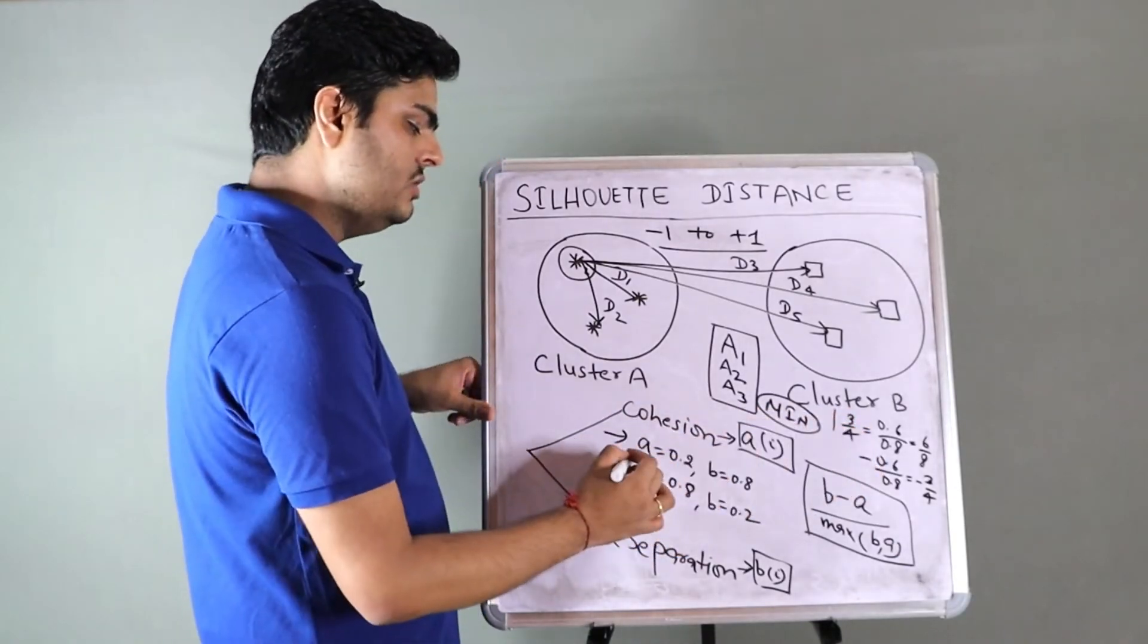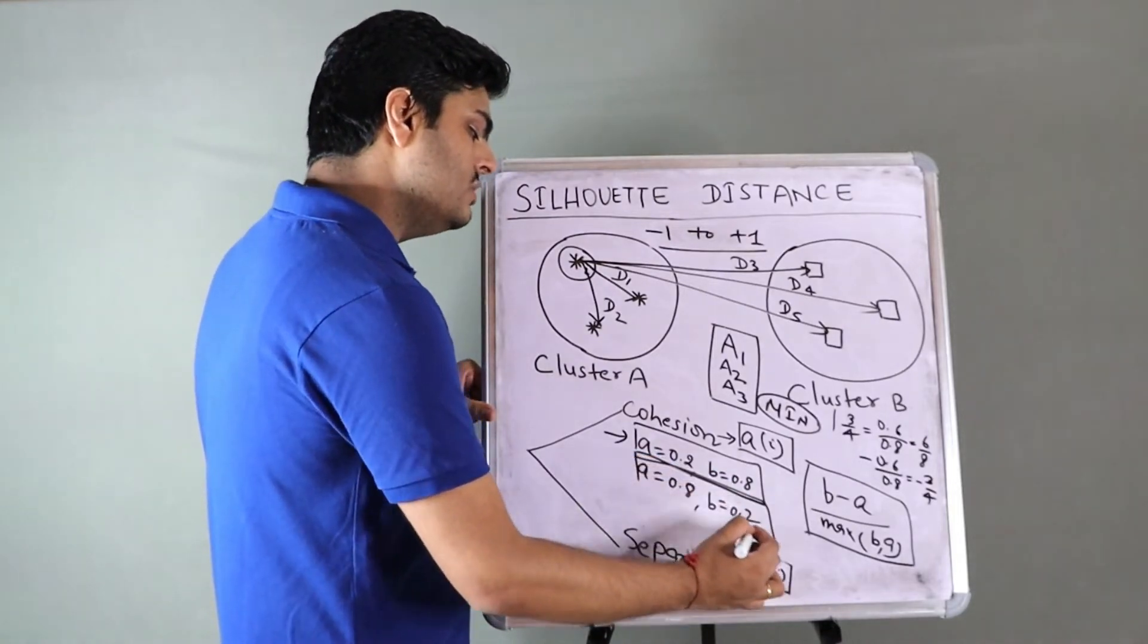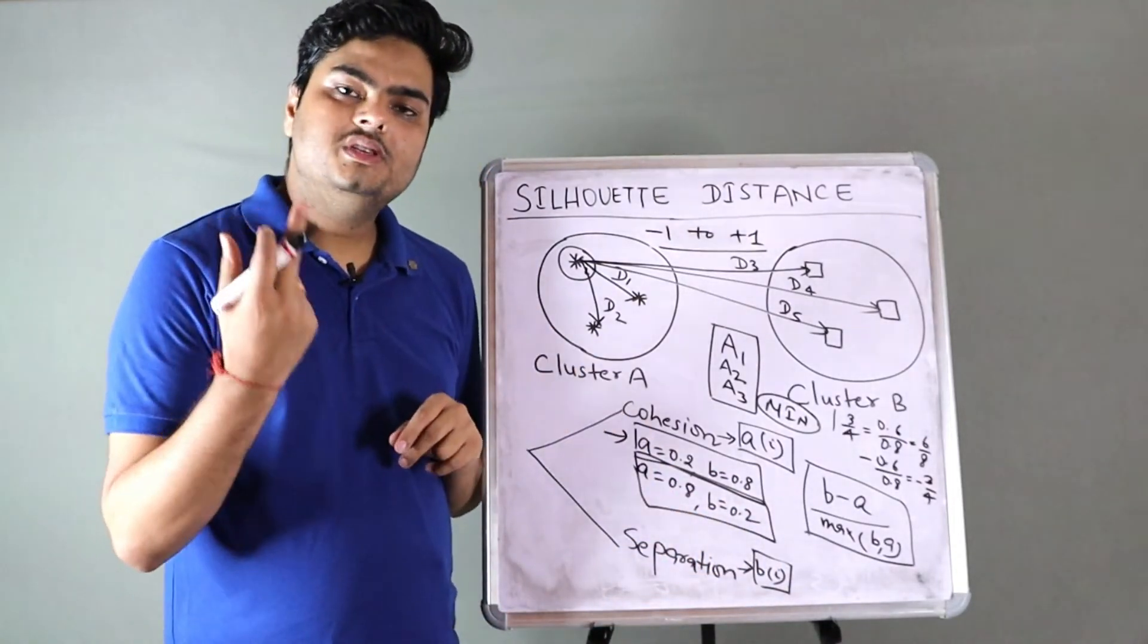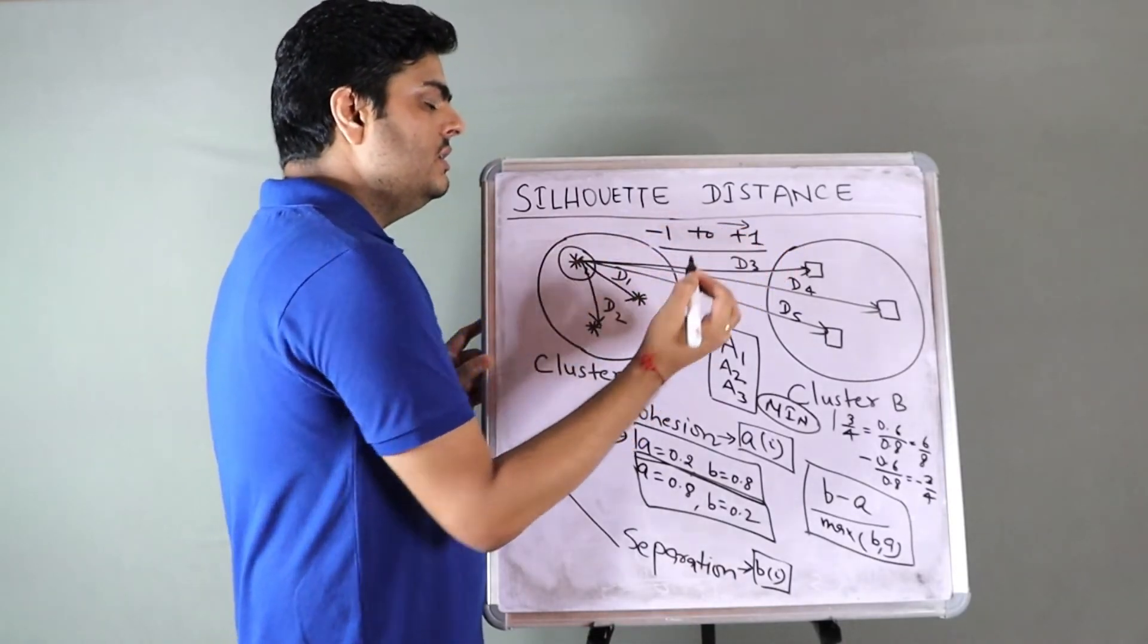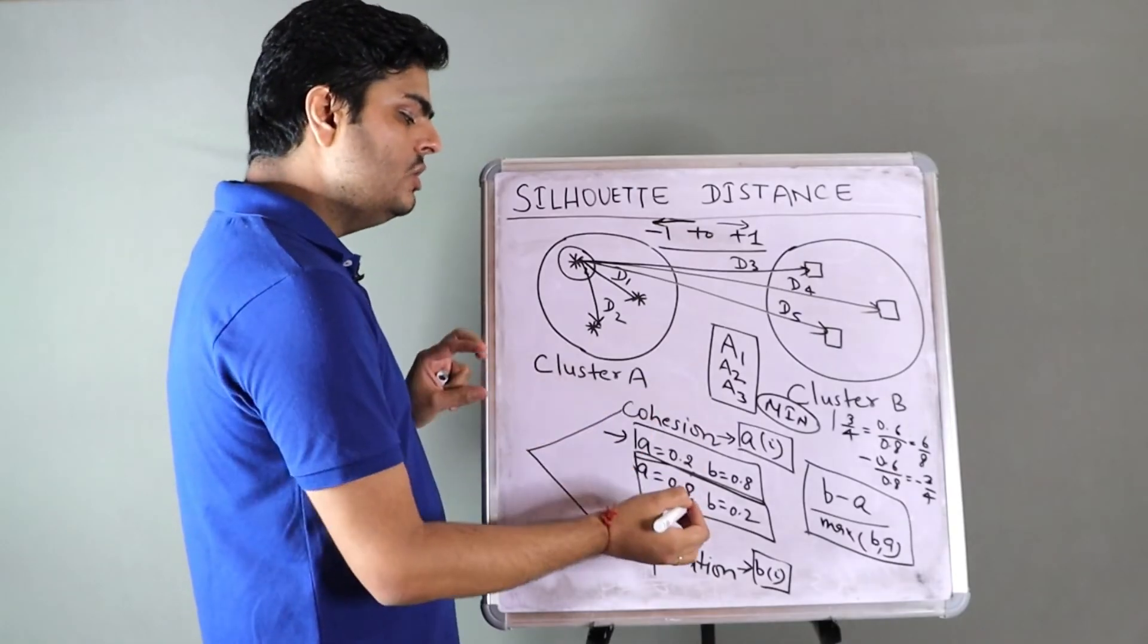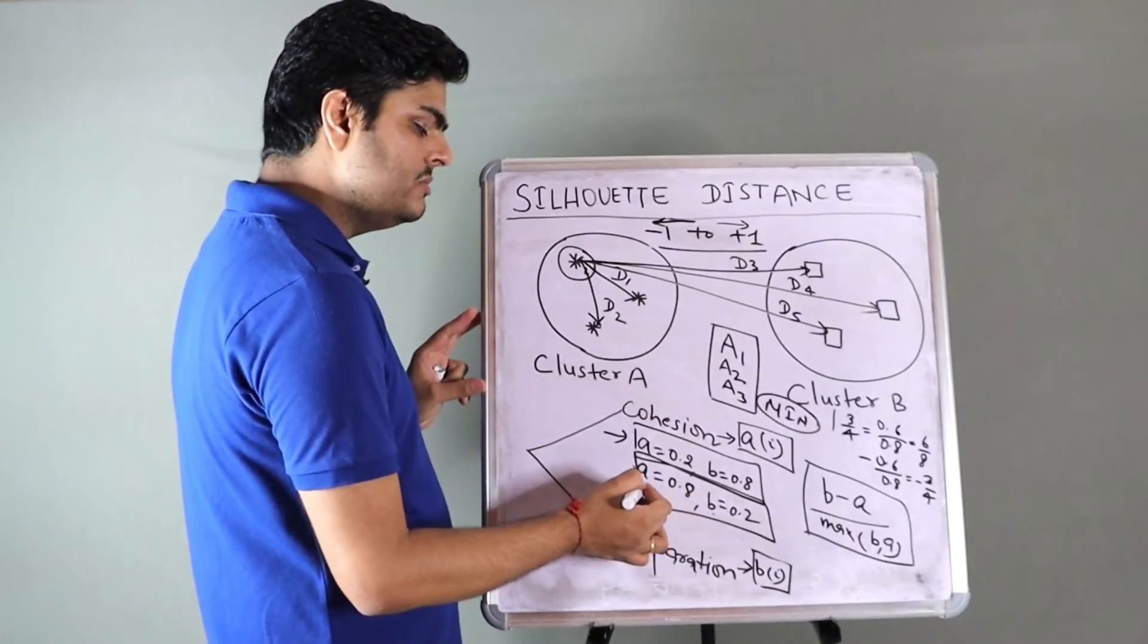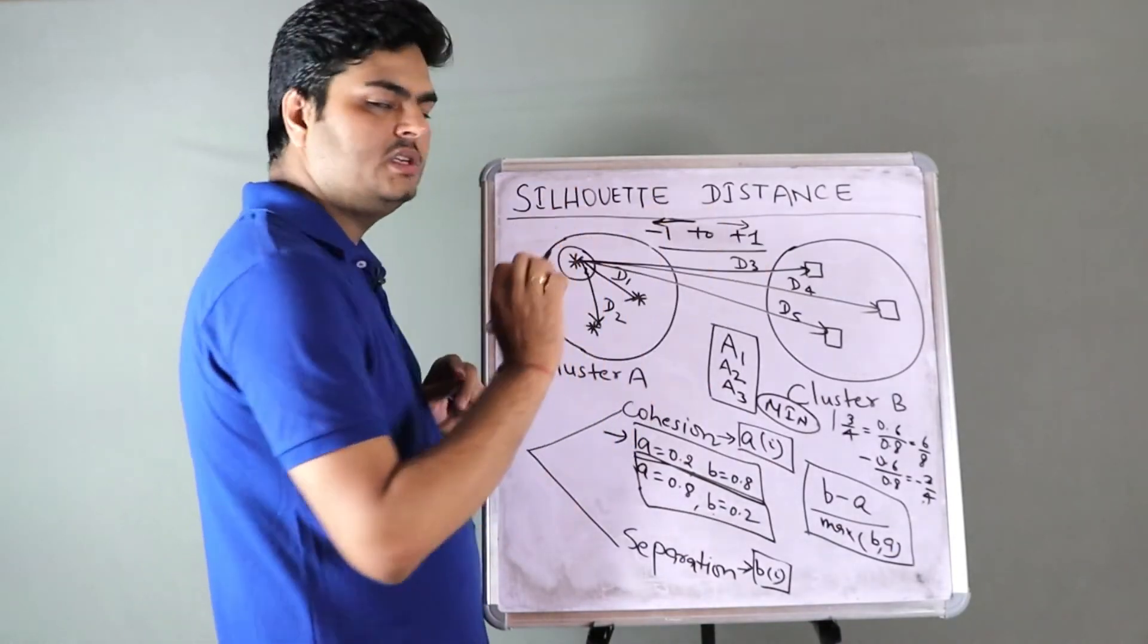Typically, A refers to your cohesion. Cohesion should be high or low? Cohesion should be low. So let us put a low number in cohesion. Situation 1: A equals 0.2 and B equals 0.8. Situation 2: A equals 0.8 and B equals 0.2. Let us calculate the silhouette coefficient for both these cases.